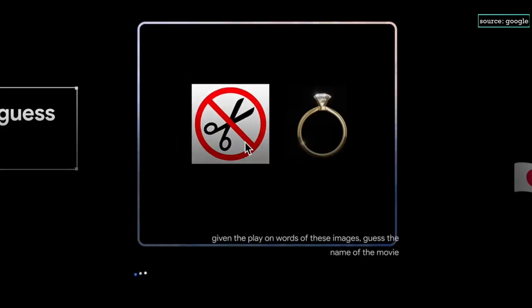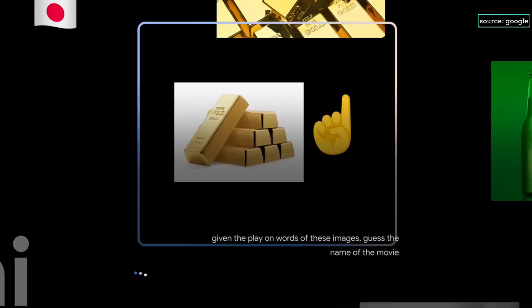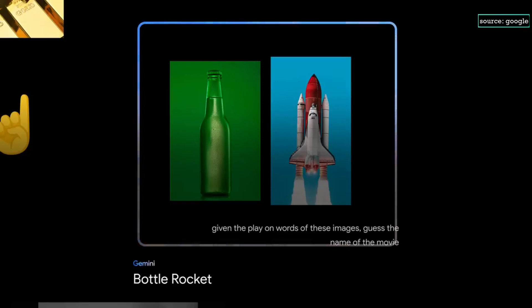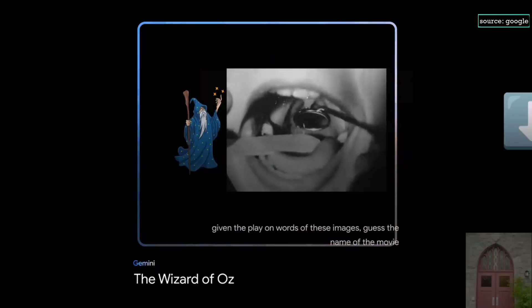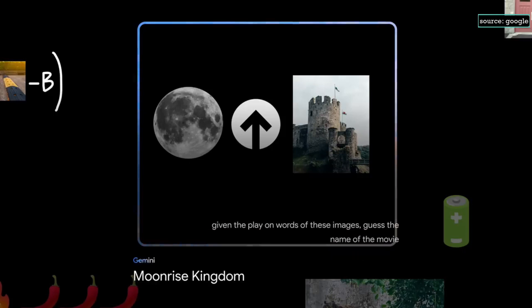Alright. What about this? Uncut Gems. So these are working. Here's a couple more quick tests I ran through. Goldfinger. Nice. Bottle Rocket. Okay. The Wizard of Oz. Nice. Moonrise Kingdom.